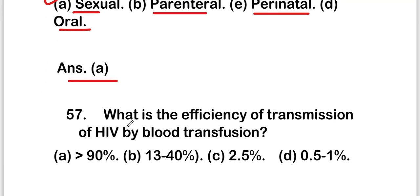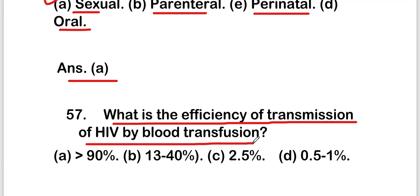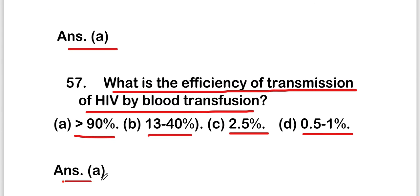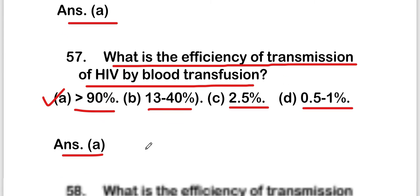The next question is: what is the efficiency of transmission of HIV by blood transfusion? Options are more than 90%, 13 to 40%, 2.5%, or 0.5 to 1%. The right answer is option A, that is more than 90%. So the efficiency of HIV transmission by blood transfusion is more than 90%.